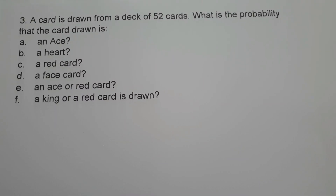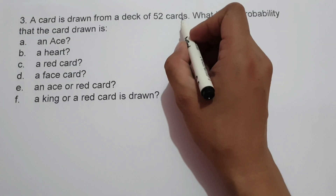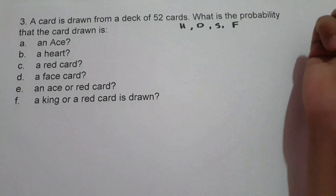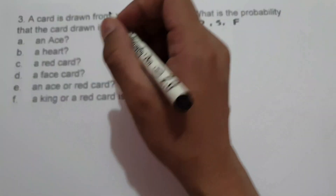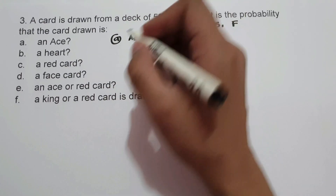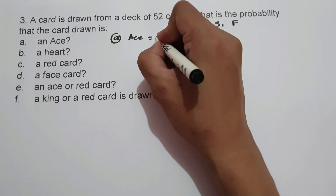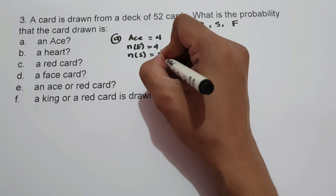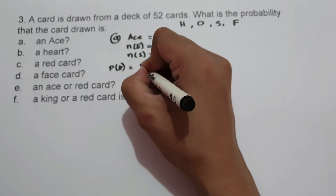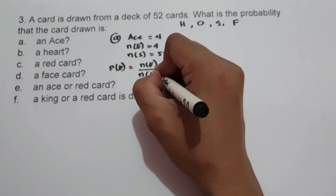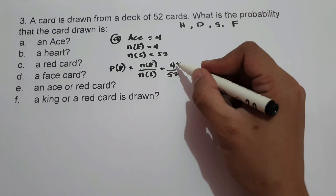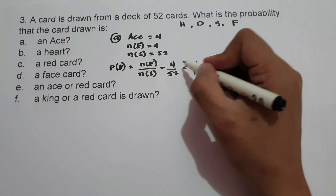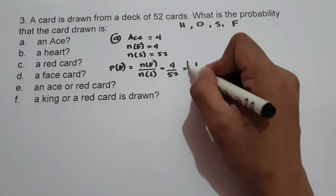On example number 3, a card is drawn from a deck of 52 cards. A deck of 52 cards consists of heart, diamond, spade, and club. On letter A, an ace — how many aces do we have in 52 playing cards? That will be 4. So the number of favorable outcomes is 4 and the number of possible outcomes is 52. The probability is 4 over 52, and since it is divisible by 4, we can write our answer as 1 over 13.